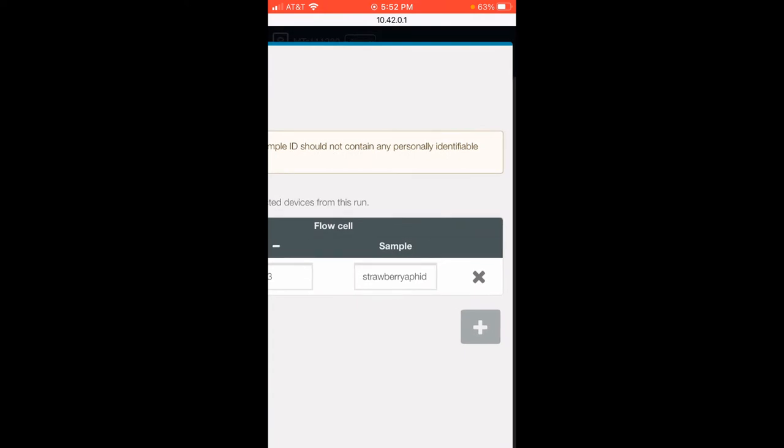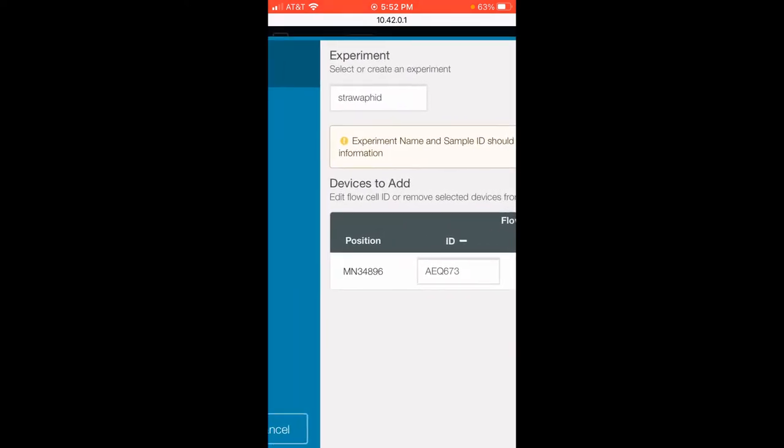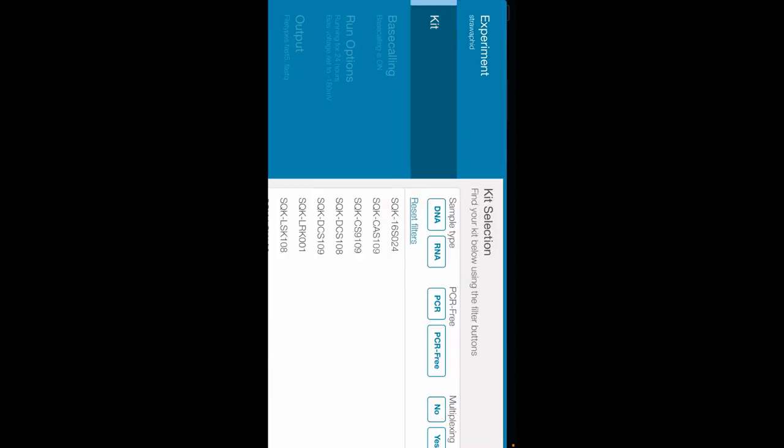And off to the left here, as I scroll, you'll see which kit are you using. We're using the field sequencing kit which is SQK-LRK001. Everything else we can go ahead and just use what would be the defaults there.